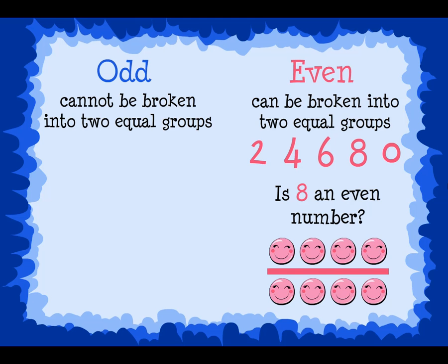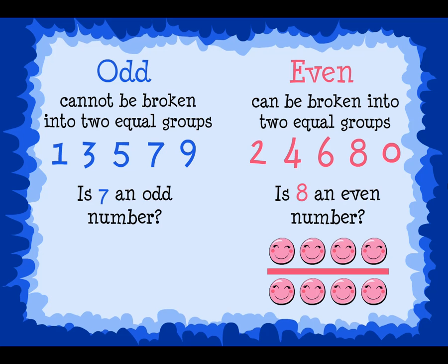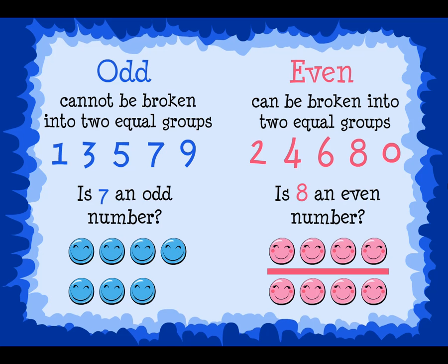Odd numbers always have a 1, a 3, a 5, a 7, or a 9 in the ones place. Is seven an odd number? Yes, seven is an odd number because it cannot be broken into two equal groups. There would be one left over.